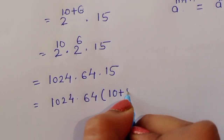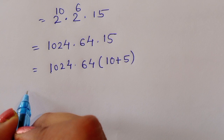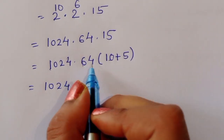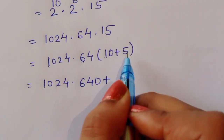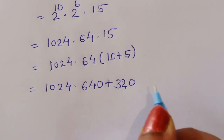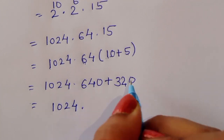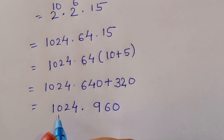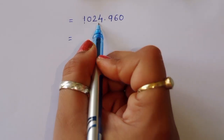We are doing simplification, so we write 15 as 10 plus 5. Then 1024 times 64 times 10 gives us 640, and 64 times 5 gives us 320. So 64 times 15 equals 640 plus 320, which is 960. Now we have 1024 times 960.